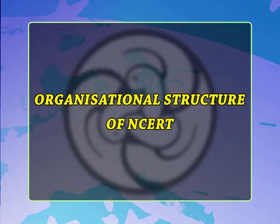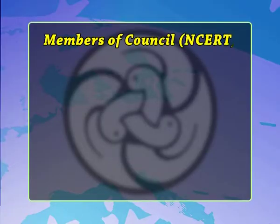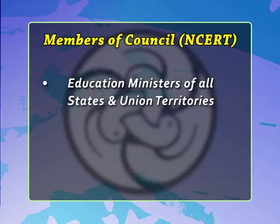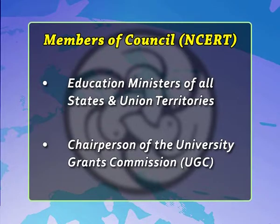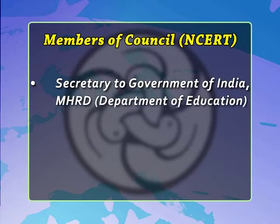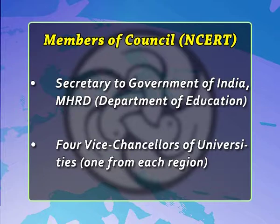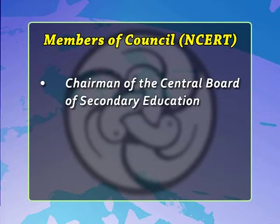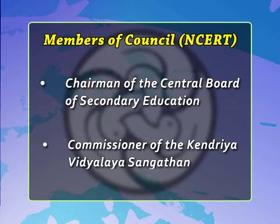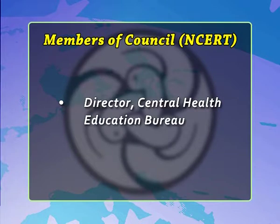The organizational structure of NCERT begins with its general body, called the Council, which is headed by the Union Minister of Human Resource Development as its president. Members include education ministers of all states and union territories, the Chairperson of the University Grants Commission, the Secretary to the Government of India (MHRD Department of Education), four vice-chancellors of universities (one from each region), the Chairman of CBSE, the Commissioner of Kendriya Vidyalaya Sangathana, the Director of Central Health Education Bureau, members of the executive committee, and up to six nominees from the Government of India, of whom at least four shall be school teachers.